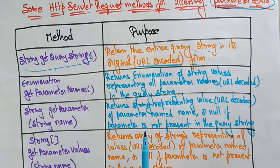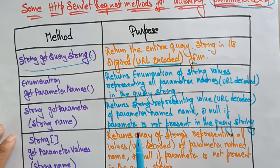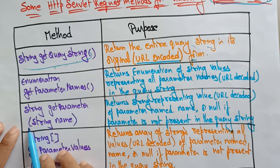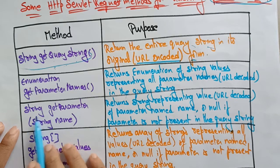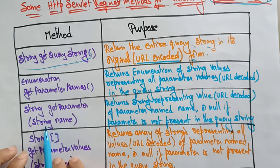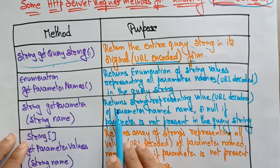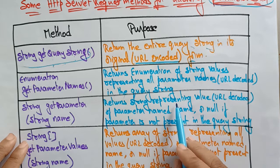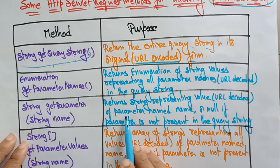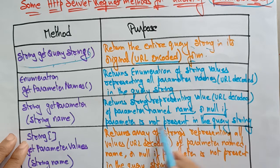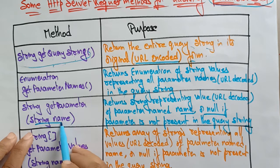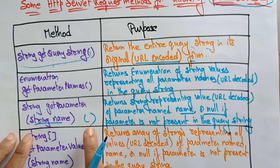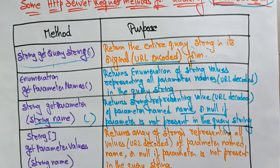Another method of the HTTP servlet request for accessing the parameter data is String getParameter(String name). You pass in the string name of the parameter you want. It returns a string representing the URL-decoded value of that parameter, or null if the parameter is not present in the query string.